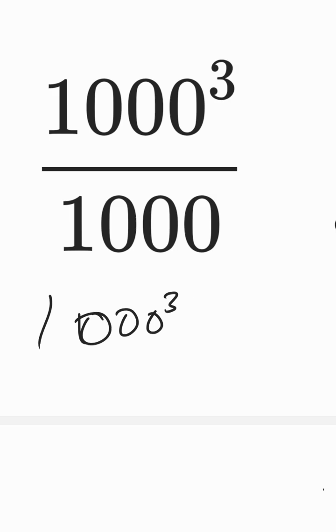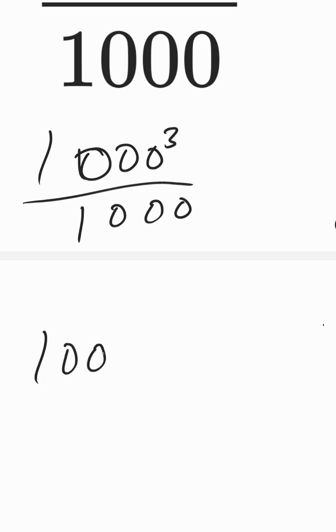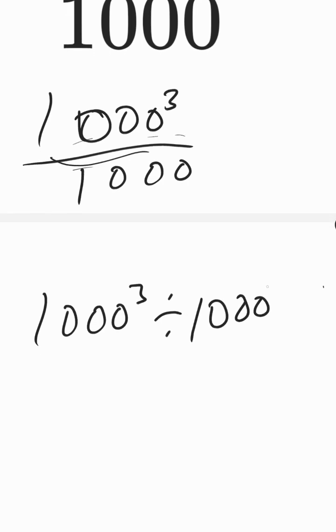So here I'm going to have 1000 to the third power over 1000. This bar I change to a division sign, divided by 1000. This one has an invisible one, but we don't put it.